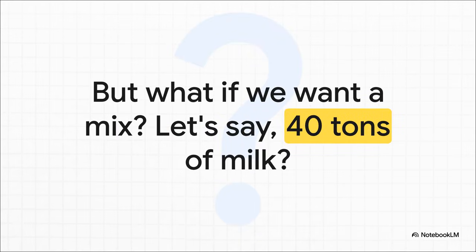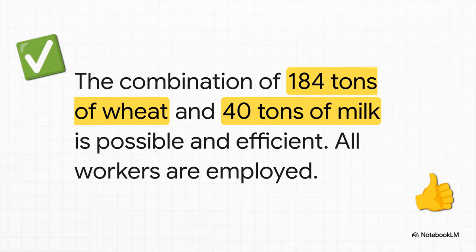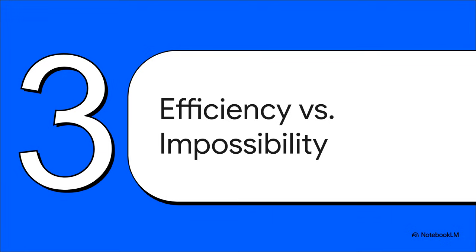An economy usually wants a little bit of everything, so let's pick a point somewhere on that line. What if our society decides we need exactly 40 tons of milk — how much wheat can we still make alongside it? To get those 40 tons of milk, and each worker makes five tons, we need eight workers for that job. That leaves 92 workers free to make wheat. 92 workers times two tons each gives us 184 tons of wheat. So we have a new point right on our frontier: 184 tons of wheat and 40 tons of milk. This combination is totally possible and efficient, because every single one of our 100 workers has a job.